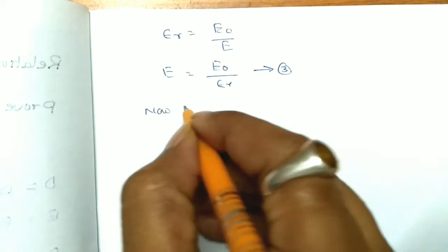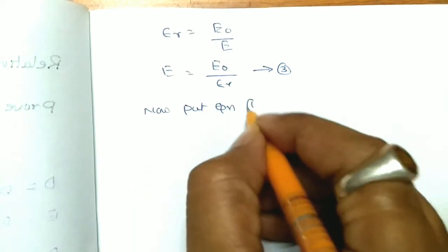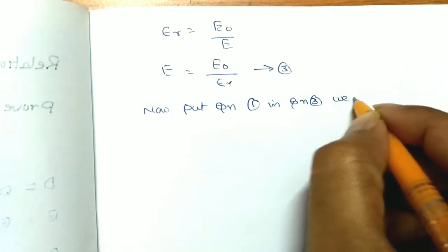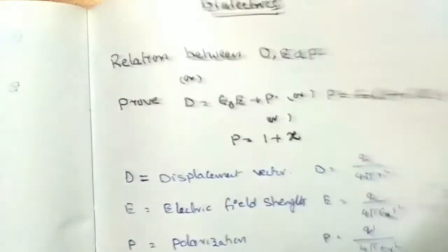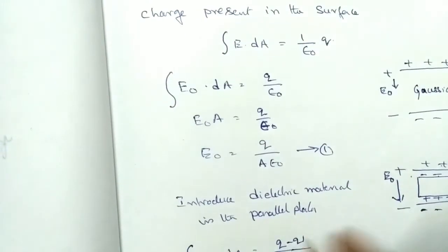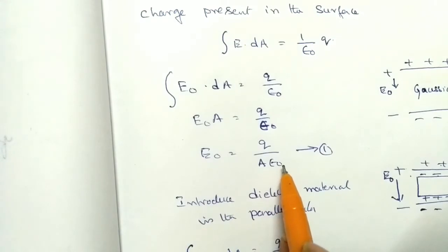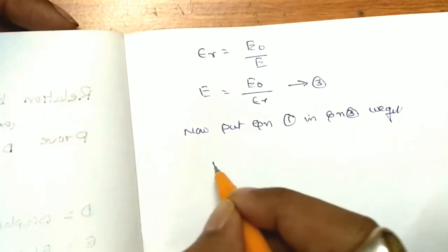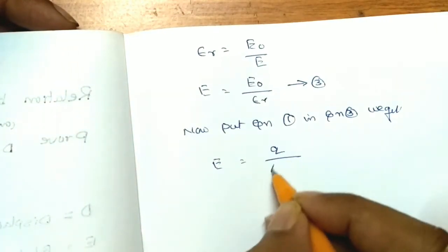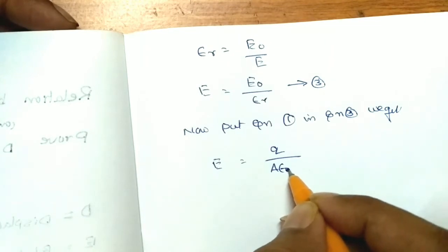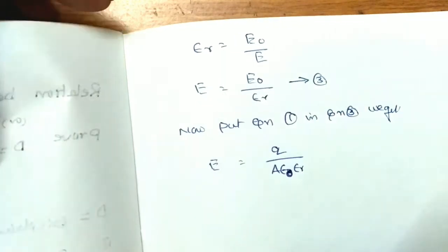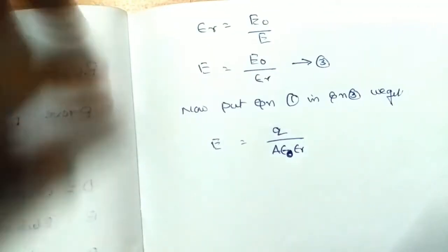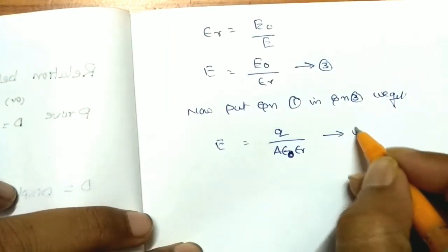Now put equation 1 into equation 3. E naught is equal to Q by A epsilon naught, so E becomes Q by (A epsilon naught into epsilon r). This is equation number 4.